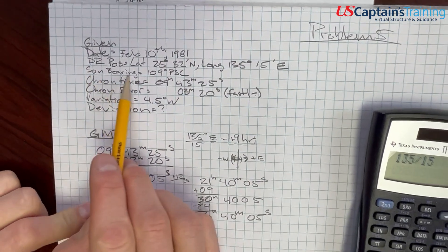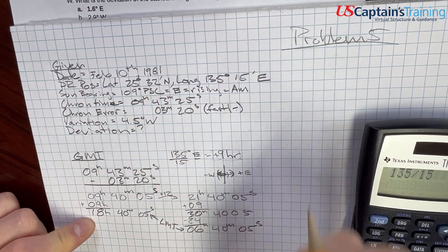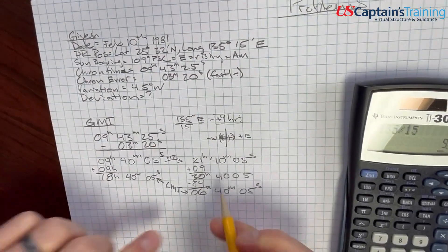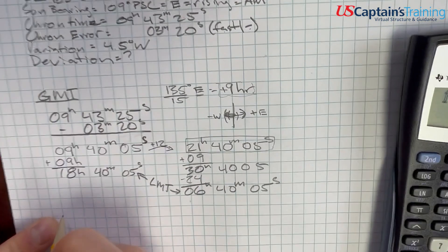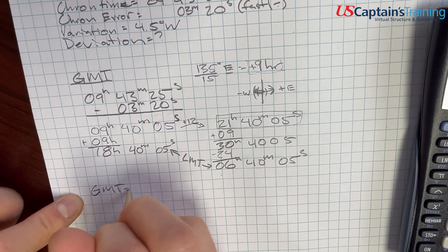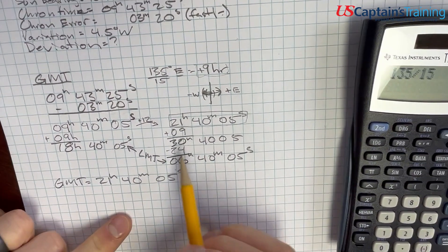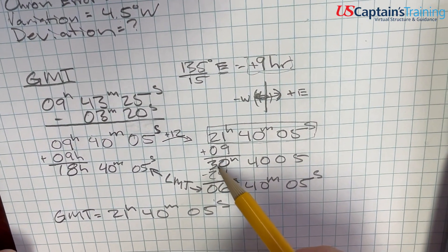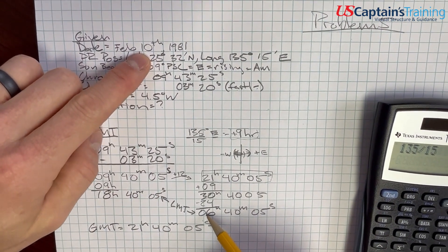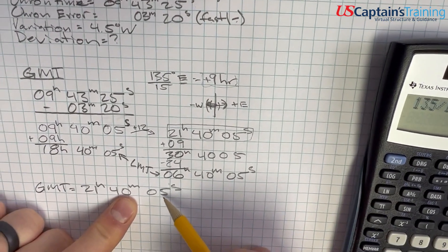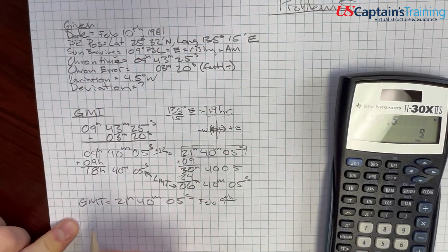What day is it? What time is it? So the sun, the bearing of the sun we saw was 109. That's in the east, which means it's rising, which means we are in the AM. This is the one we're using. This is going to be our GMT. So GMT is equal to 21 hours 40 minutes 5 seconds. Now, when we added nine hours, we went forward a day. So this was our local mean time, and it was the 10th. So this time here was taken actually on the 9th, Feb 9th.